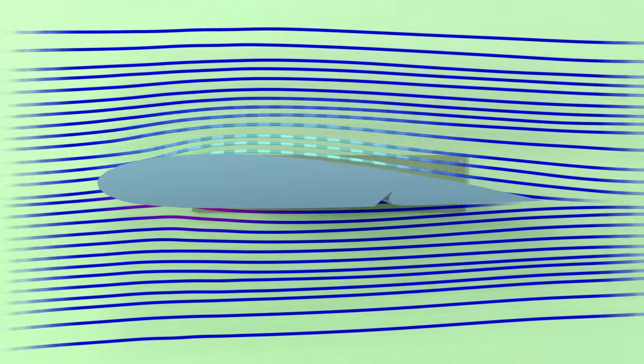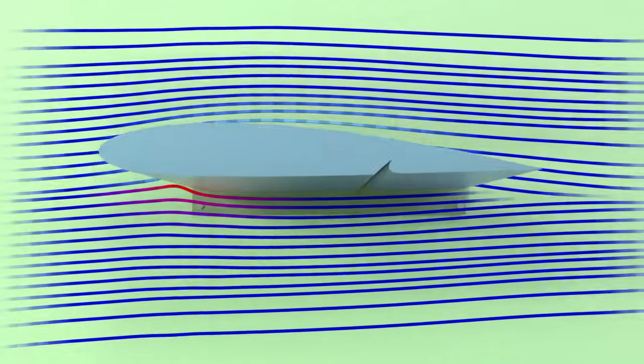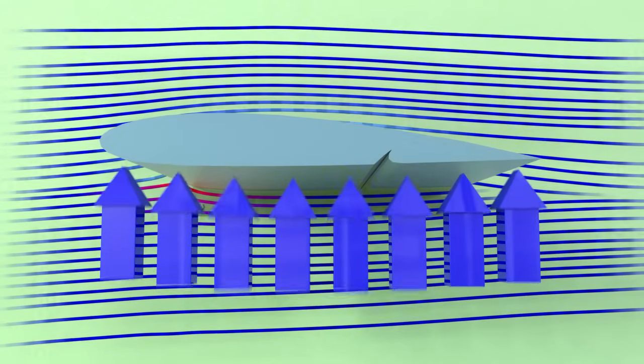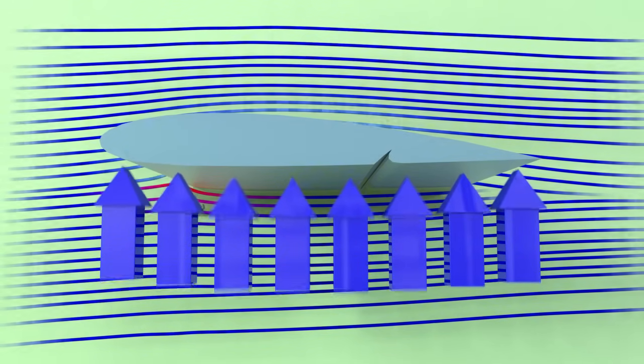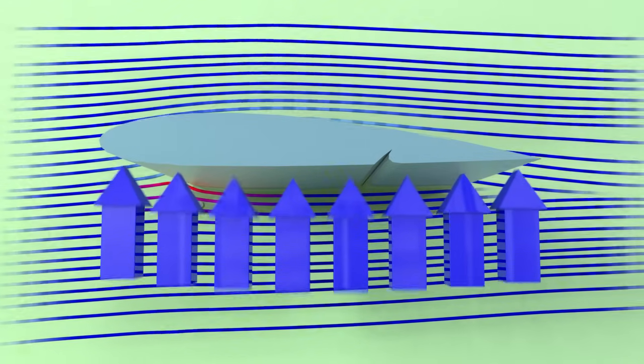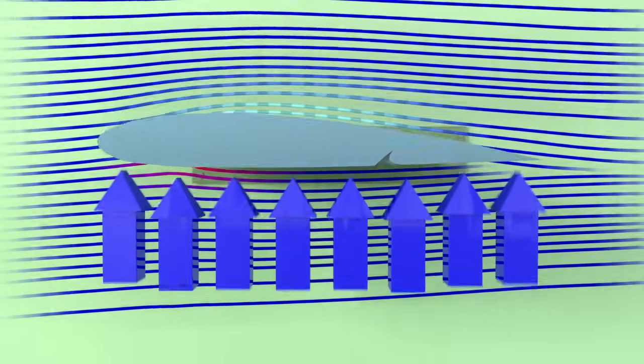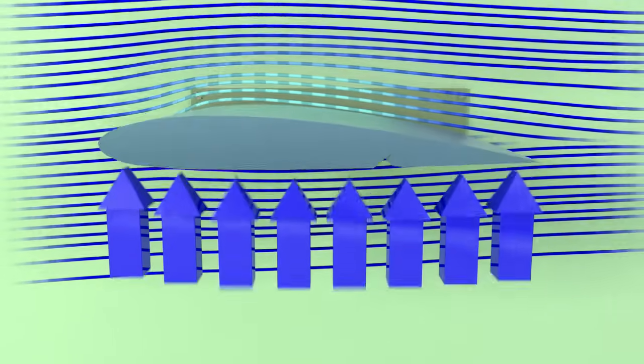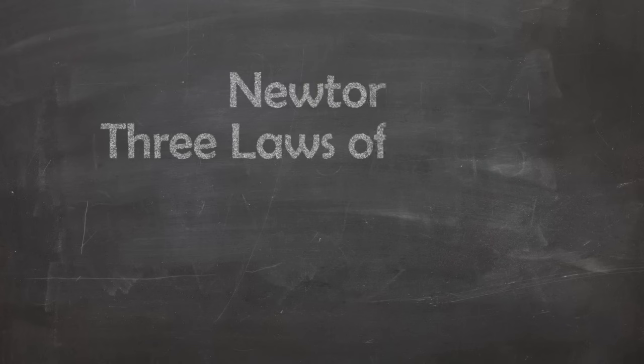Since the wing is stuck between the two areas of unequal pressure, it is lifted towards the area of low pressure by the force of the higher pressure air trying to move to the low pressure side of the wing.